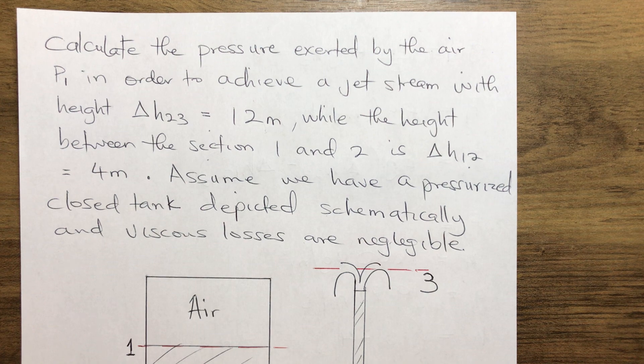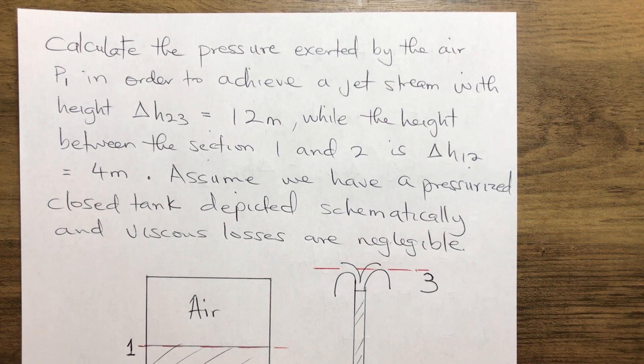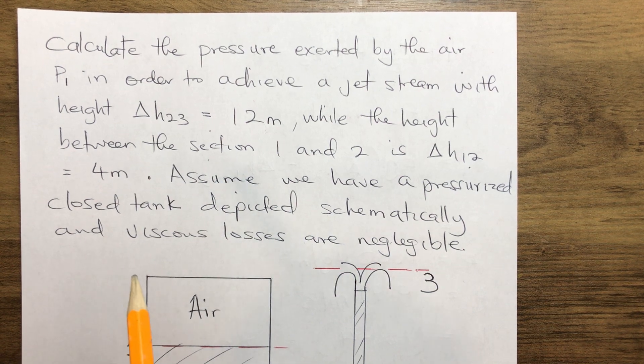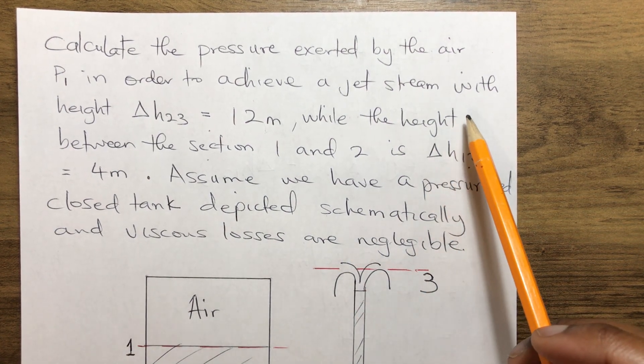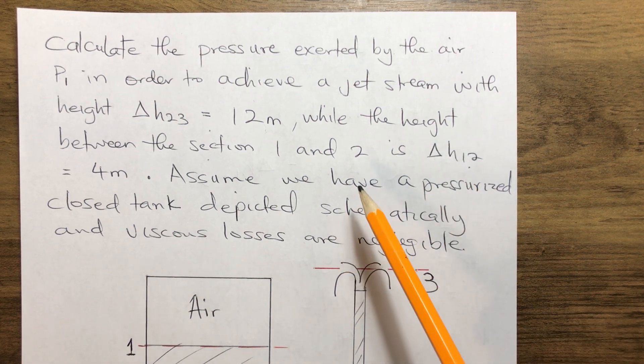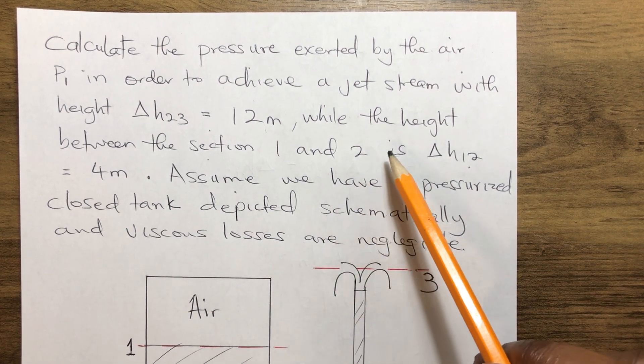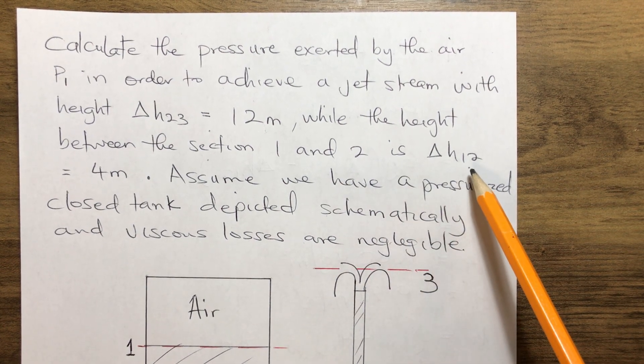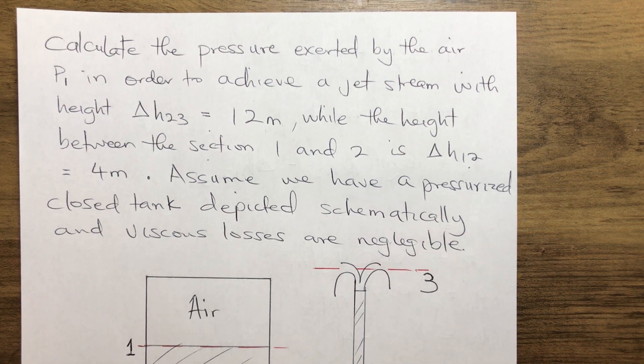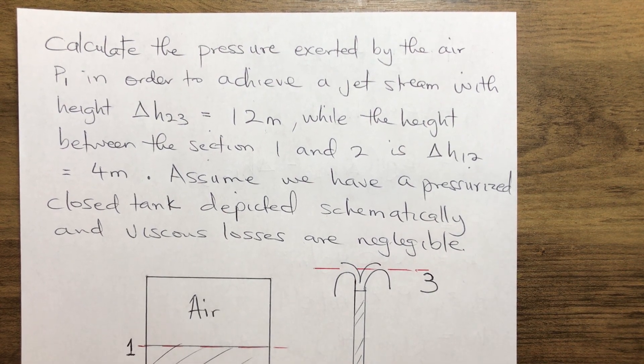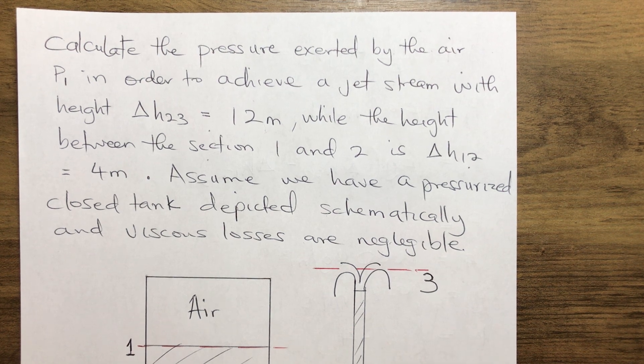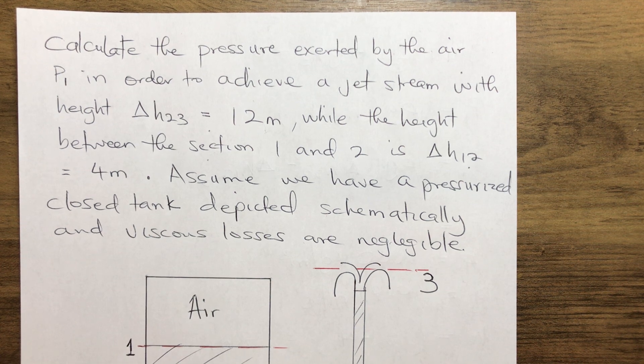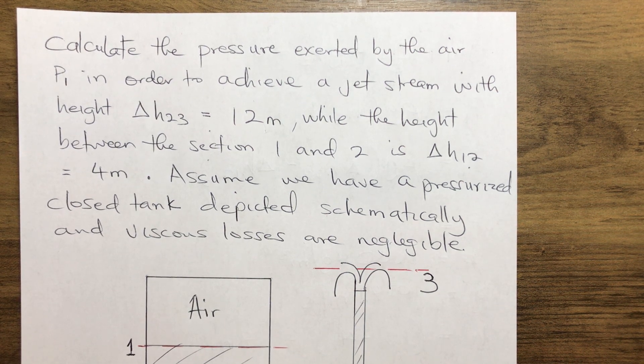Calculate the pressure exerted by the air P1, that is at station P1, in order to achieve a jet stream with height Δh23 which is 12 meters, while the height between section 1 and 2 is Δh12 which is 4 meters. Assume we have a pressurized closed tank depicted schematically and viscous losses are negligible.